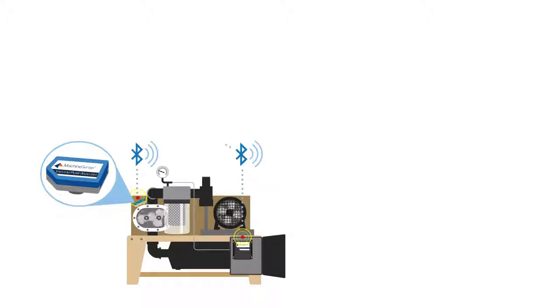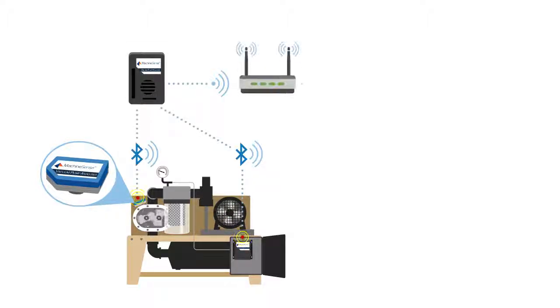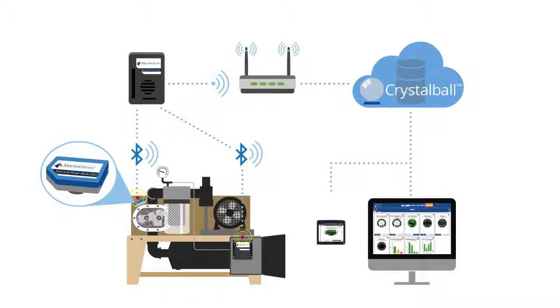The sensor data transmits to a gateway and is then sent to cloud-based servers running powerful analytic software. Machine Sense's patent-pending analytics algorithm tracks and compares the collected data against an established baseline to determine overall pump or blower health, and alerts you to changes in performance, allowing you to accurately diagnose problems before they happen.